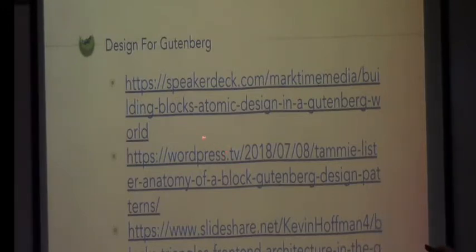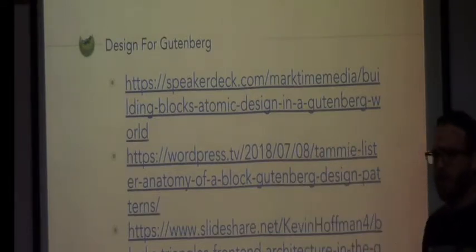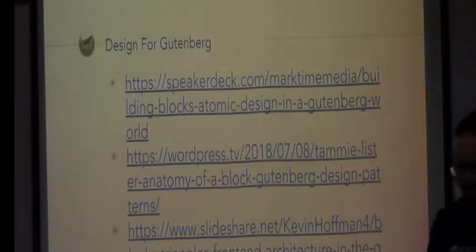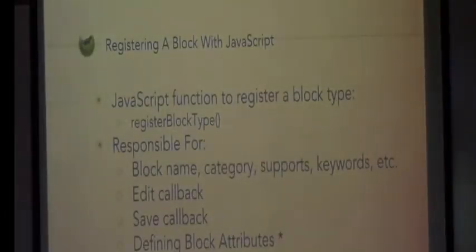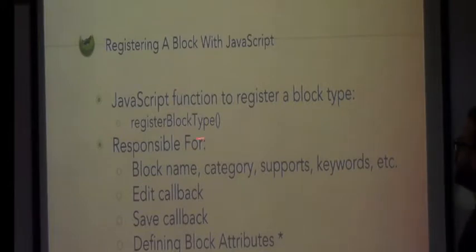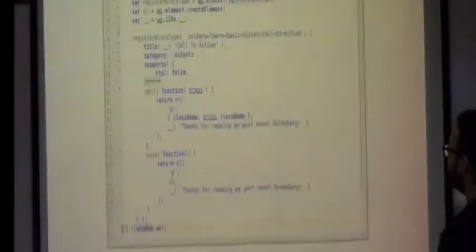I have absolutely no qualification to talk about applying CSS and design for blocks, so I won't. Here are three good talks on design for Gutenberg that you can click on when you download the slides — from Michelle Schwab, from Tammy Lister (who is one of the lead designers for Gutenberg), and Kevin Hoffman, one of the organizers here today. So there's also a JavaScript function — the rest of this talk is basically in JavaScript — called register_block_type, responsible for at least block name, category, supports, and keywords. Also the edit callback, save callback, and defining block attributes.